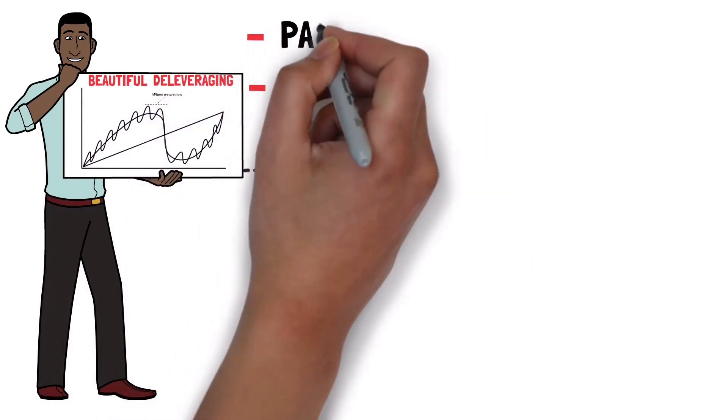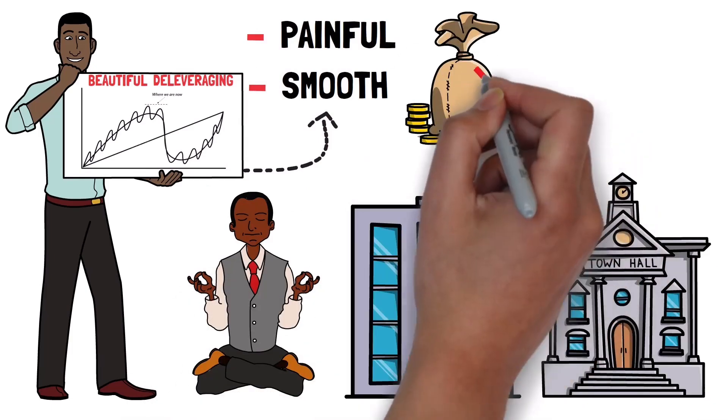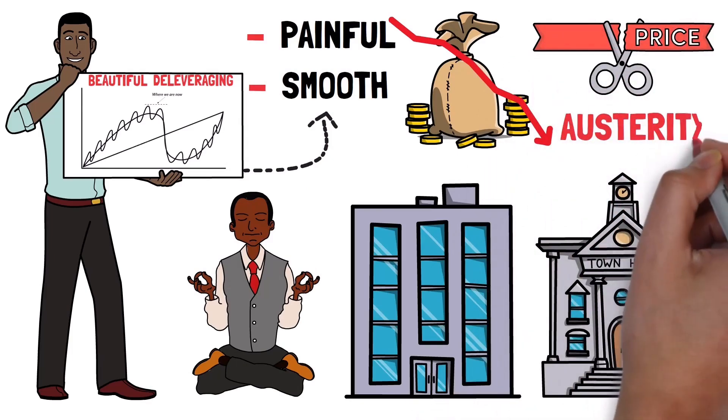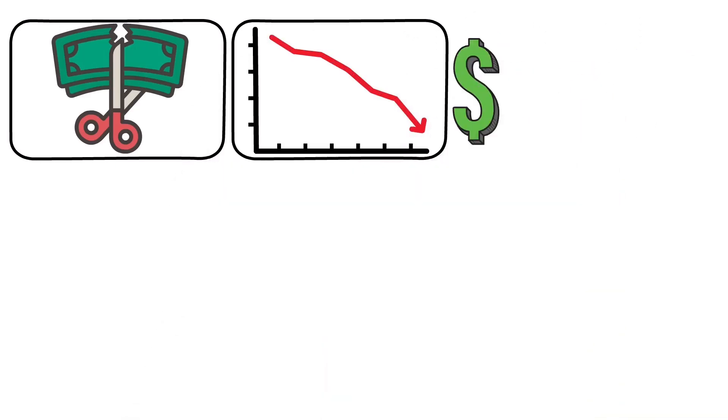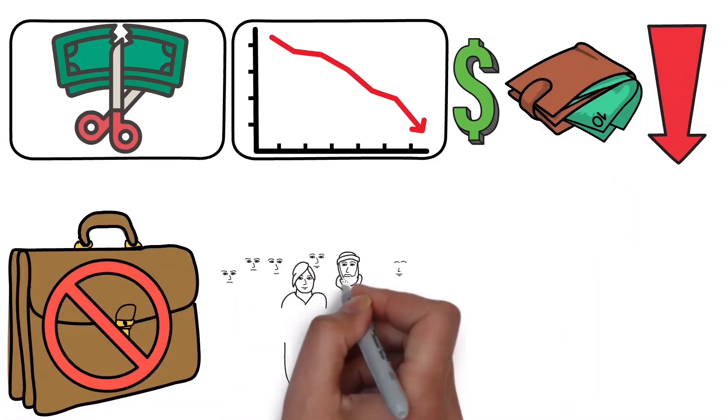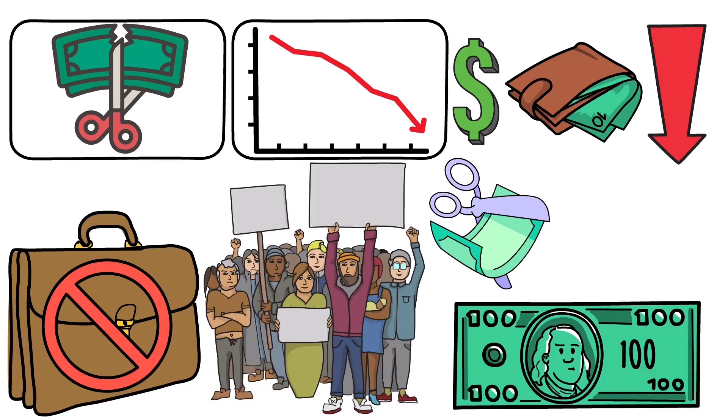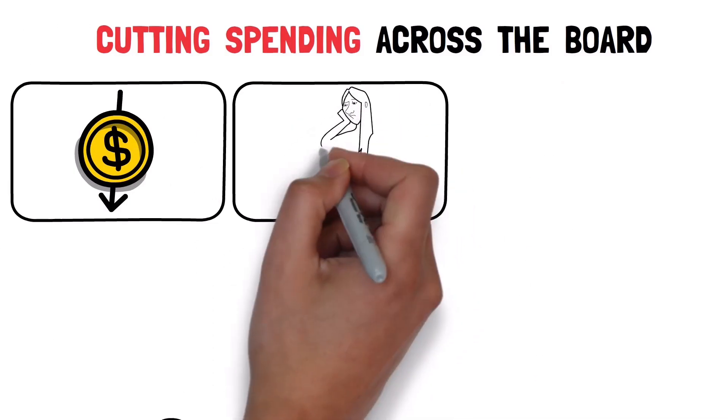Deleveraging can either be smooth or painful. Usually, when people, businesses and governments need to reduce their debt, they start by cutting their spending. This is known as austerity. As we've seen, cutting spending can be tough and lead to deflation, which means prices and incomes go down. Businesses might have to lay off workers, which leads to higher unemployment. Many countries are now looking to cut spending because taking on more debt at higher interest rates can lead to the kind of debt problems Ray mentioned earlier. But the issue is that cutting spending across the board can lower people's incomes and lead to more joblessness.